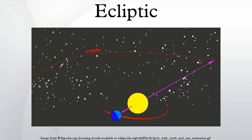The ecliptic is the apparent path of the Sun on the celestial sphere, and is the basis for the ecliptic coordinate system.